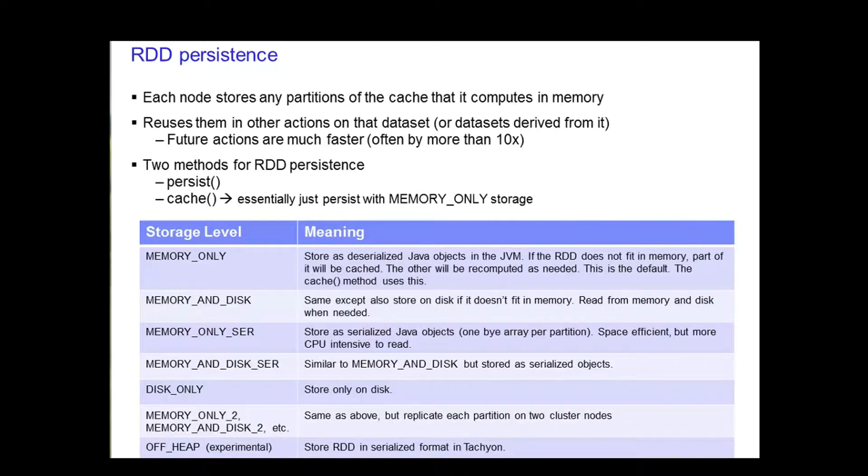There is also the option to replicate each partition on two cluster nodes. Finally, there is an experimental storage level storing the serialized object in Tachyon. This level reduces garbage collection overhead and allows the executors to be smaller and to share a pool of memory. You can read more about this on Spark's website.